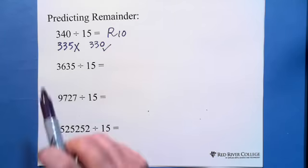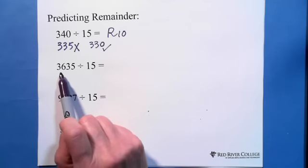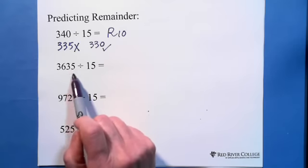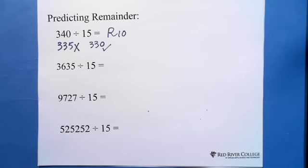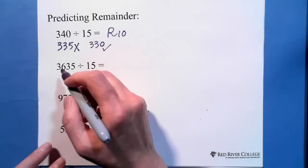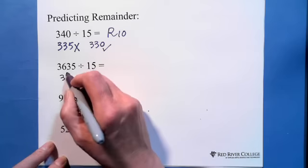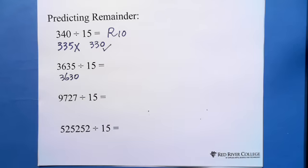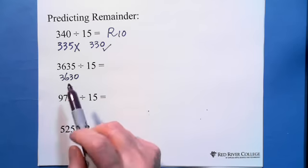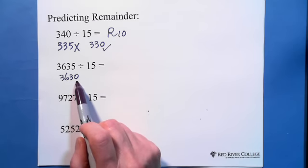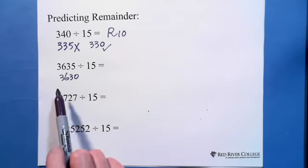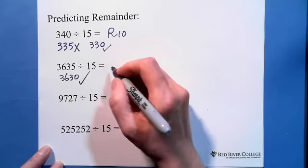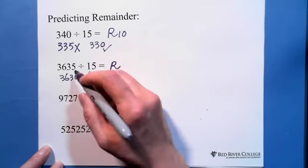This number is divided by 5, but 5 is not a multiple of 3. So we go back to 363: this number is divided by 5, and also divided by 3. So 363 is working, and the remainder is 5.